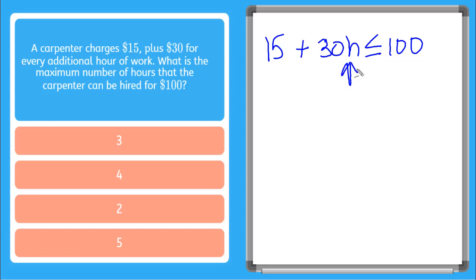Now we need to solve here for the H. So we subtract 15 from both sides. We get 30H is less than or equal to 100 minus 15 is 85.